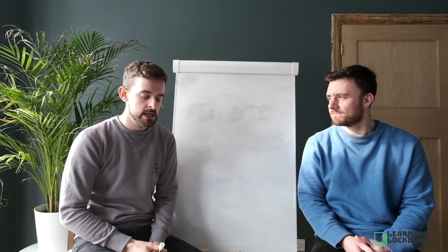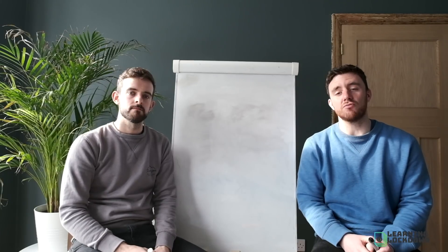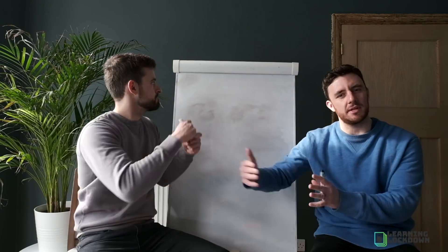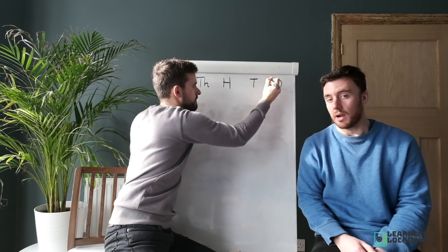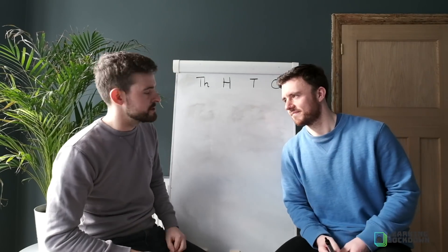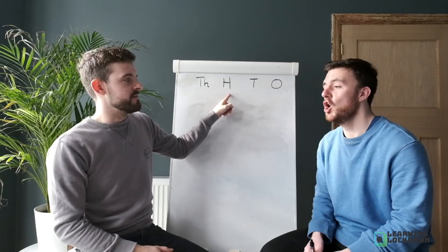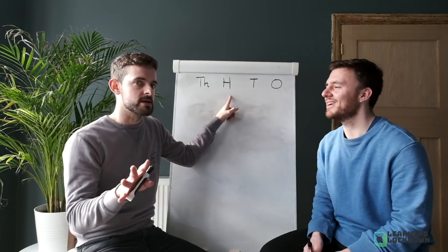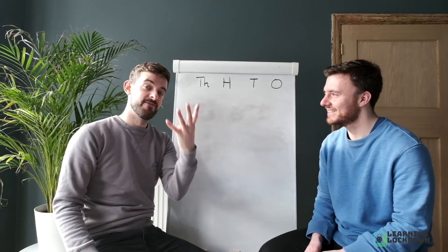Let's kick off with year three. The objective today is place value — reading and writing numbers up to different limits. For year three, your limit is up to nine thousand, nine hundred and ninety-nine. Mr S is getting the place value columns ready. We have thousands, hundreds, tens, and ones. We read them from left to right.